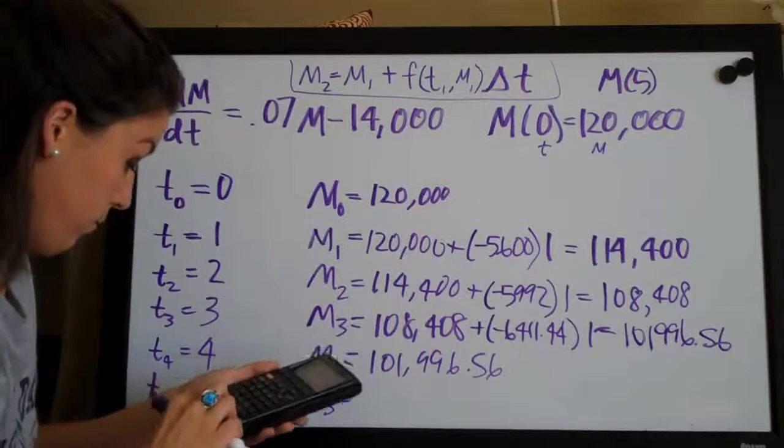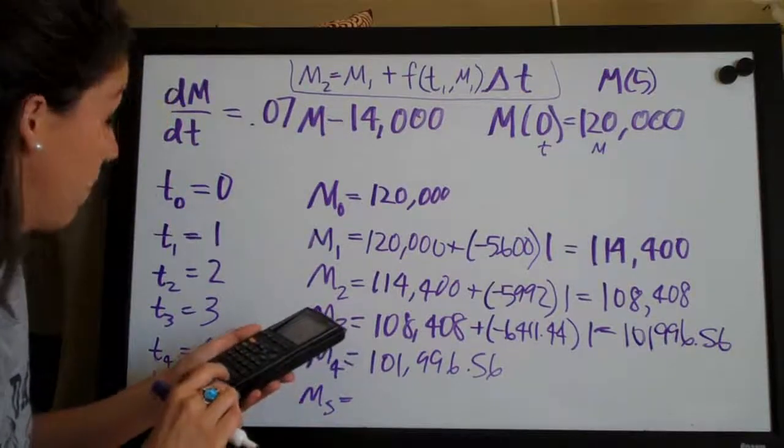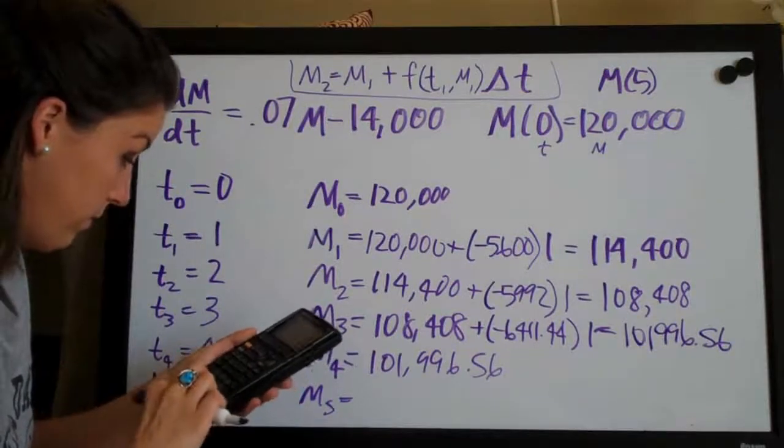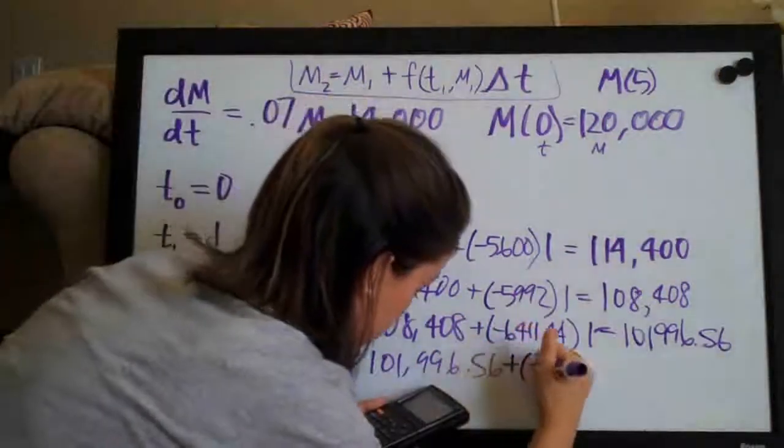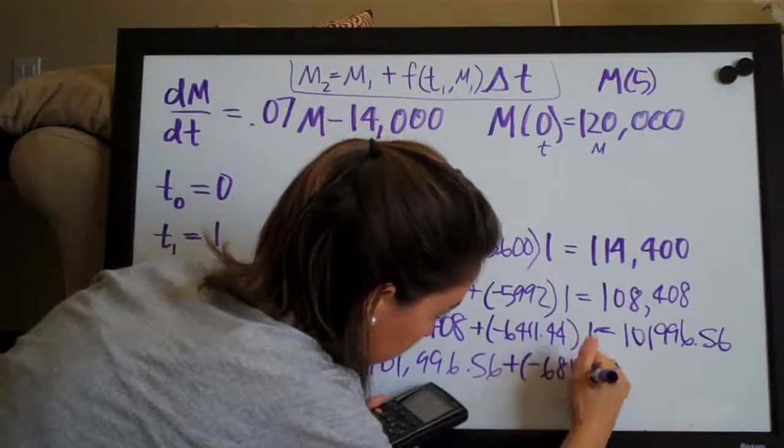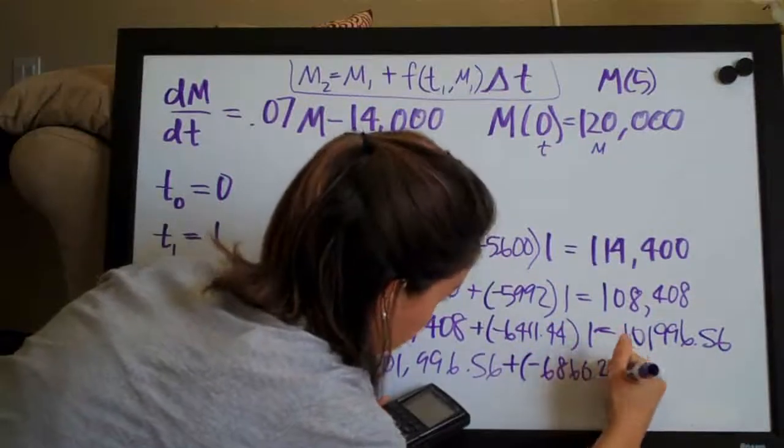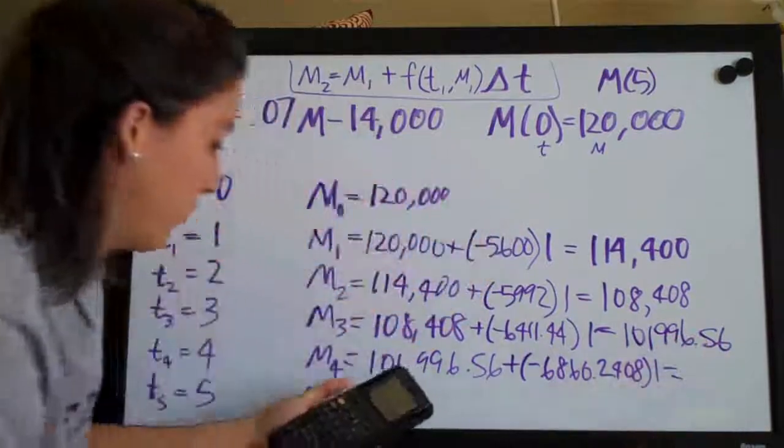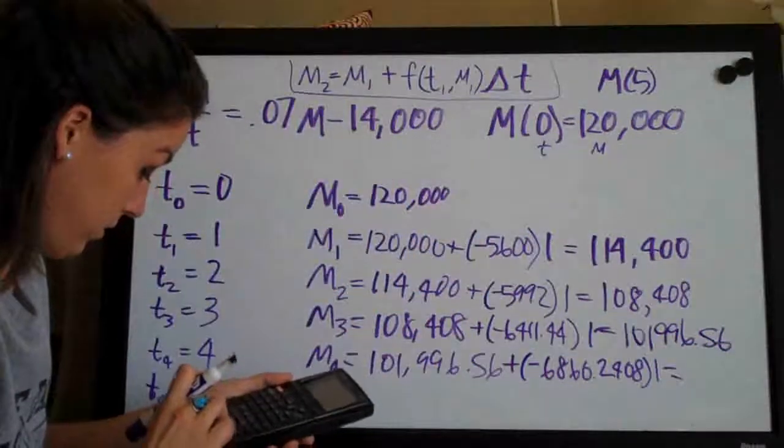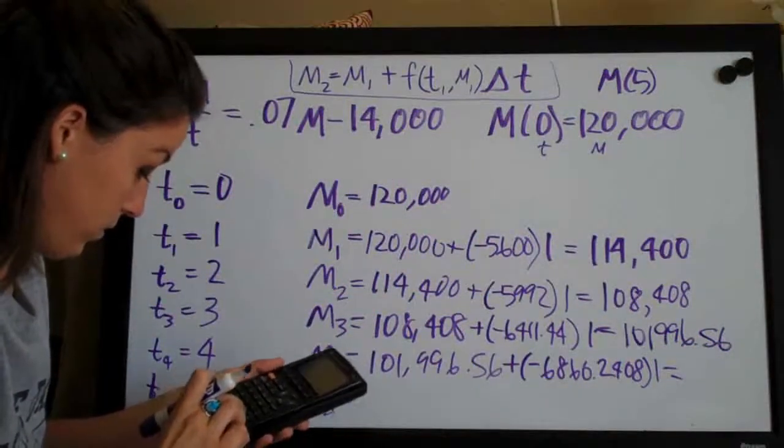And then we have, so we have plus negative 6860.2408 times 1 equals, so plus 101,996.